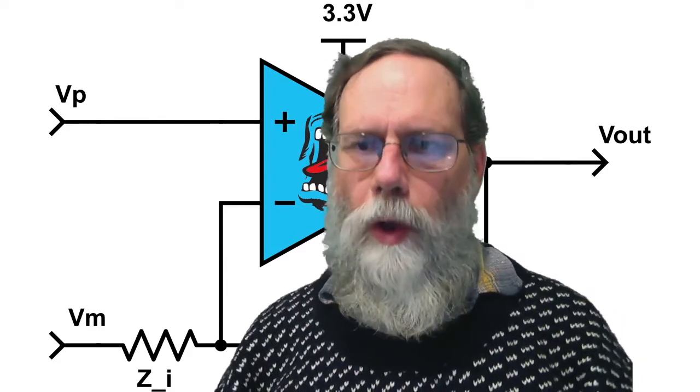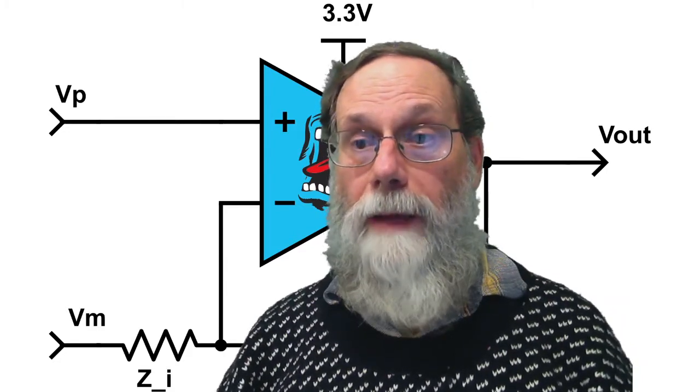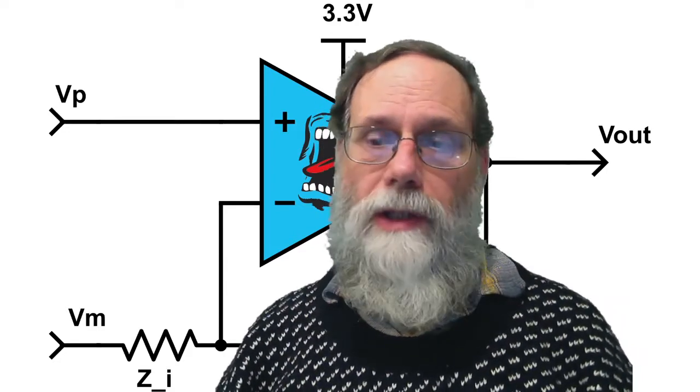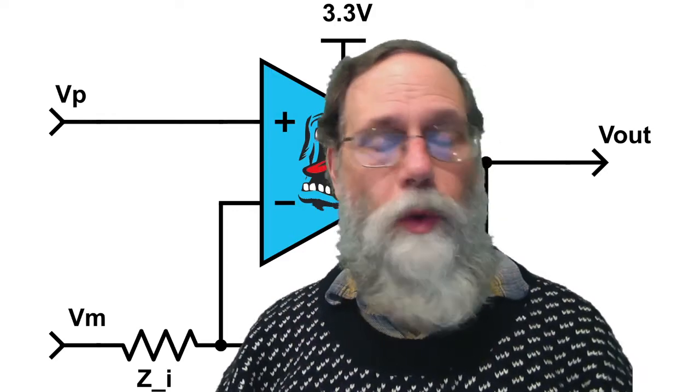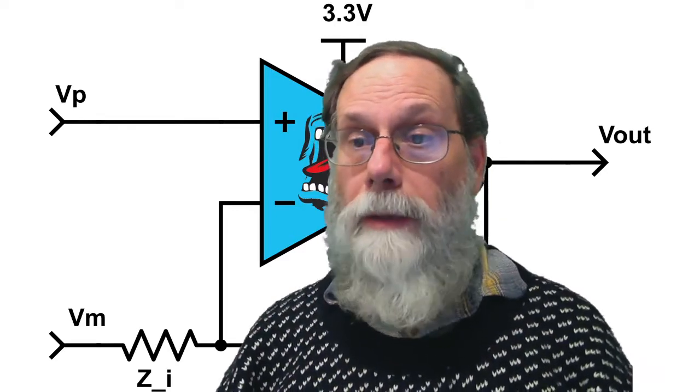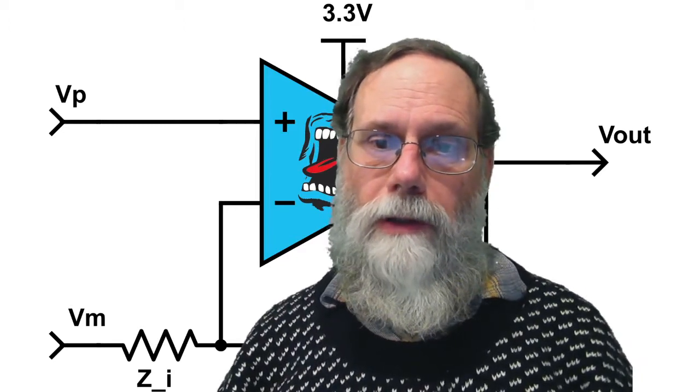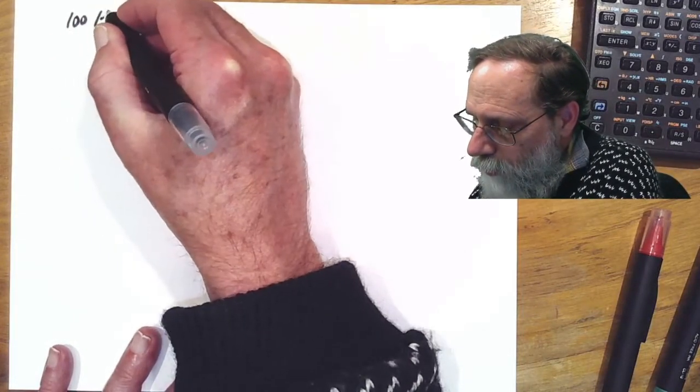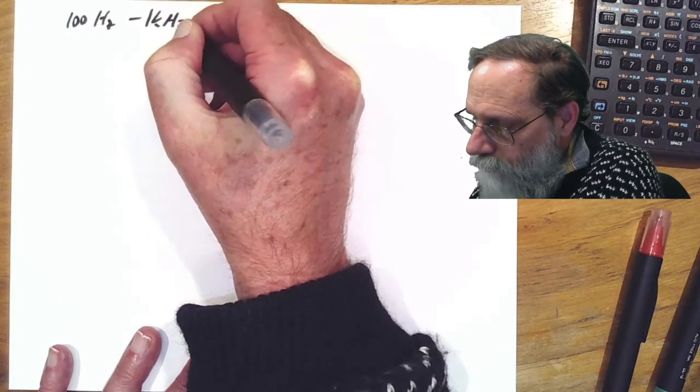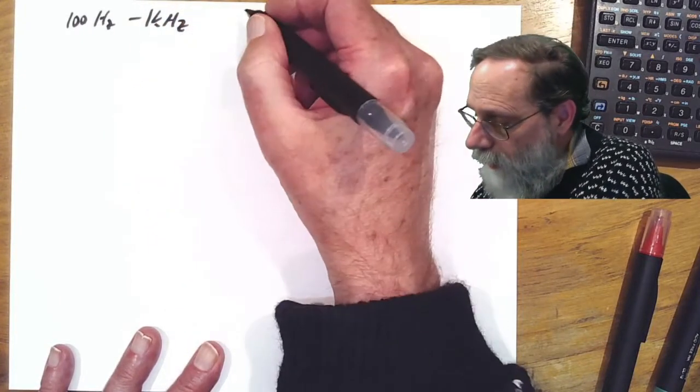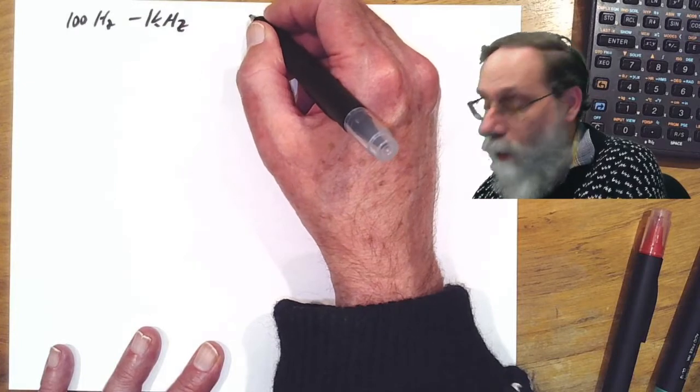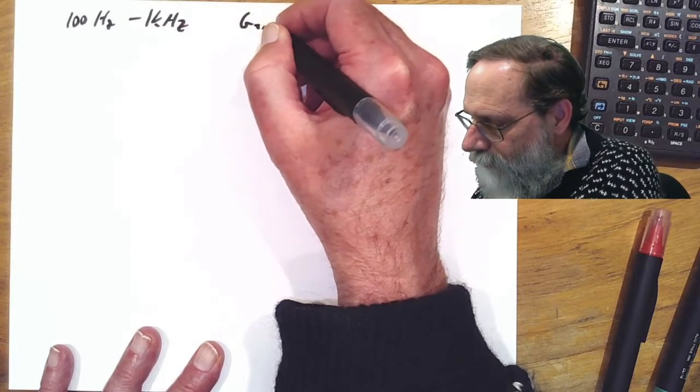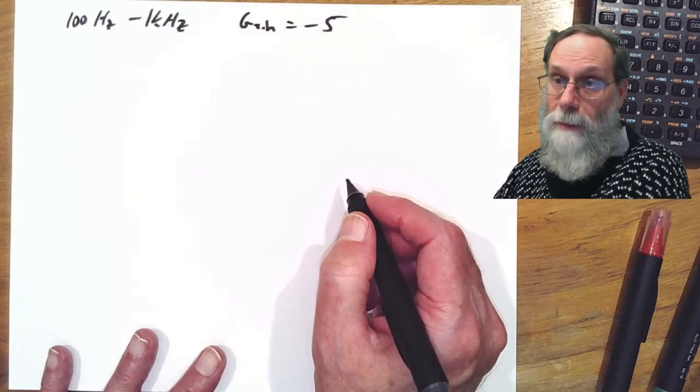This video is a worked example of designing an active band pass filter. It's the worked example that comes from section 24.4 of the Applied Analog Electronics textbook. So what are the specs and how are we going to achieve it? What I want is a passband from 100 Hz to 1 kHz, and I want a gain of 5, or more precisely minus 5 at the peak of the passband.